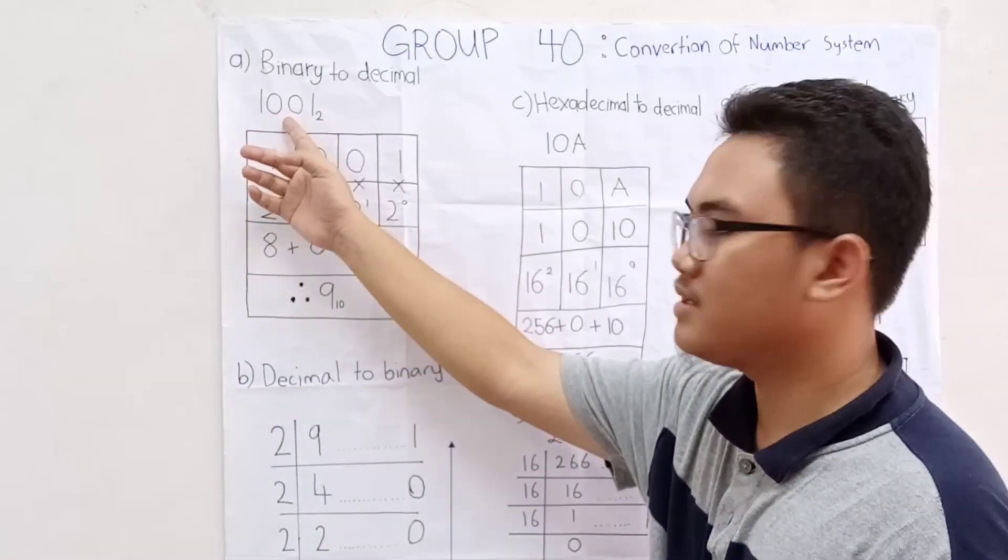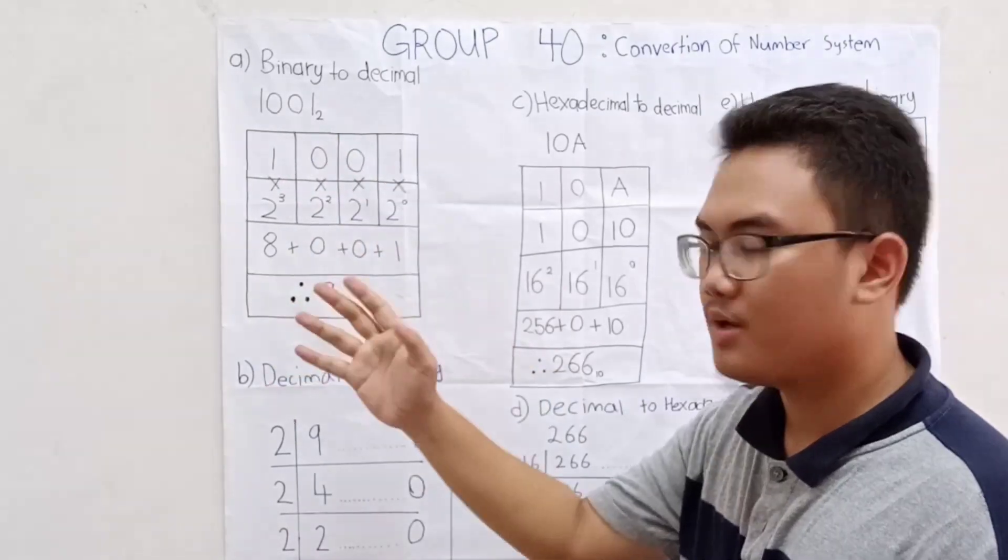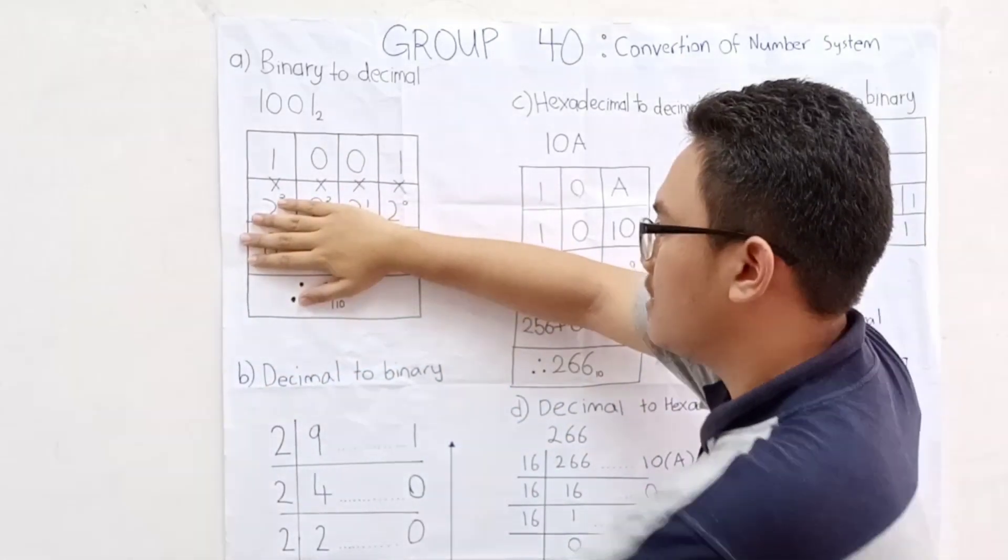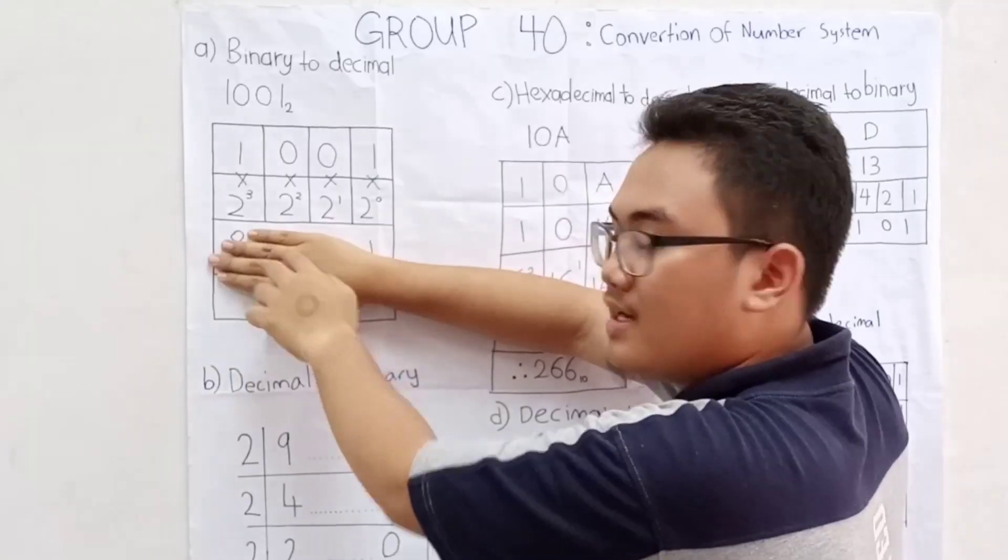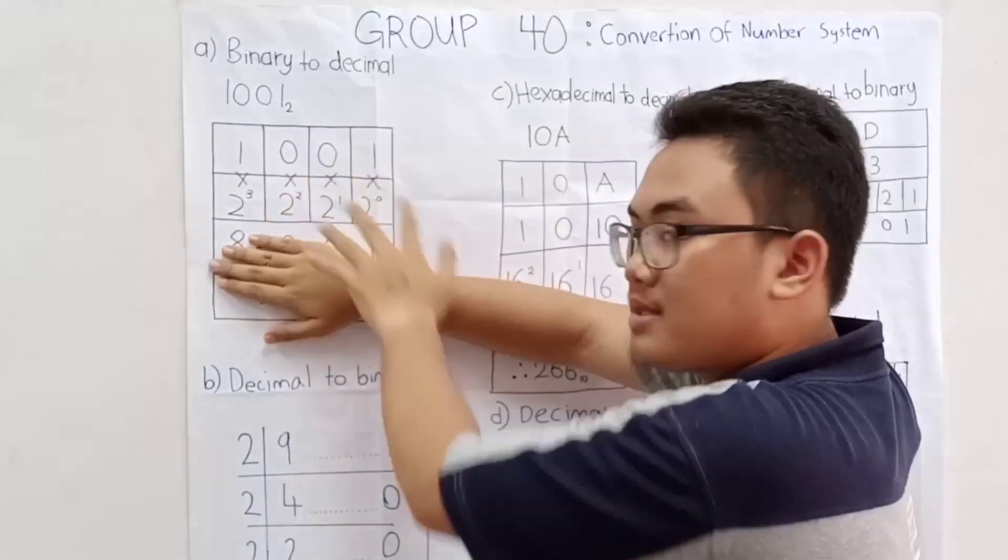1, 0, 0, 1 in base 2. Then, we make a tableau. Arrange the numbers, then add the power. Then, we multiply them.